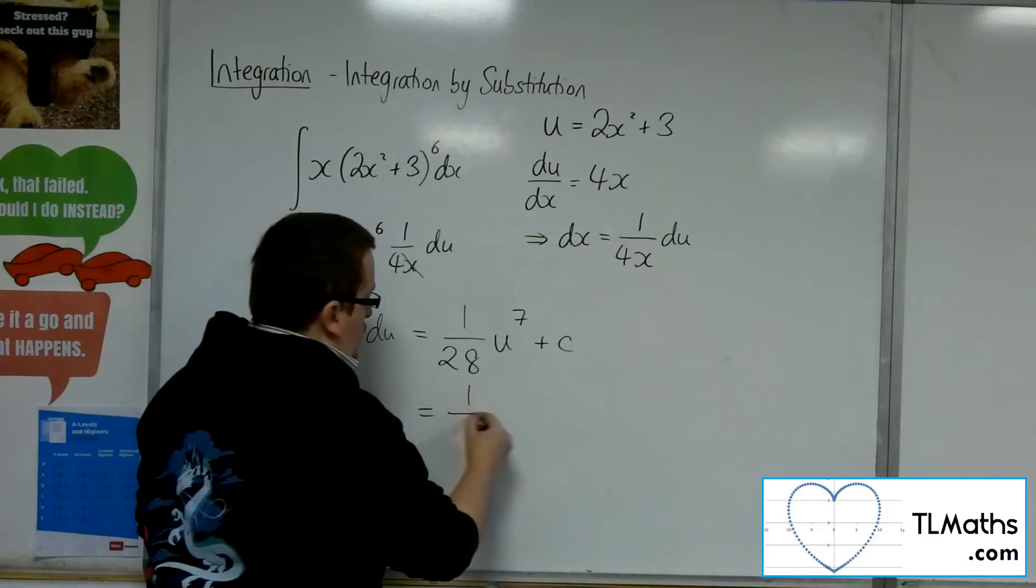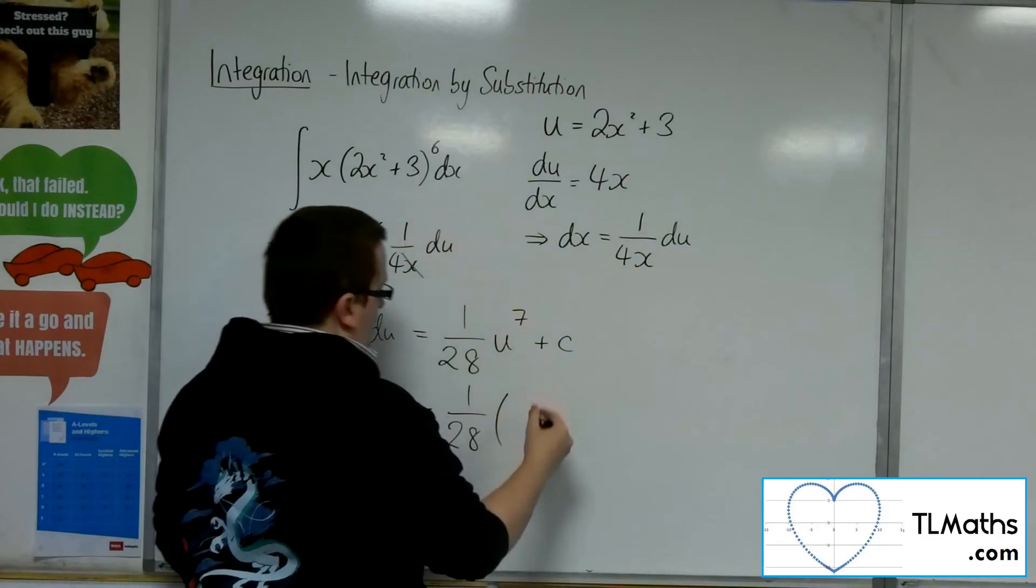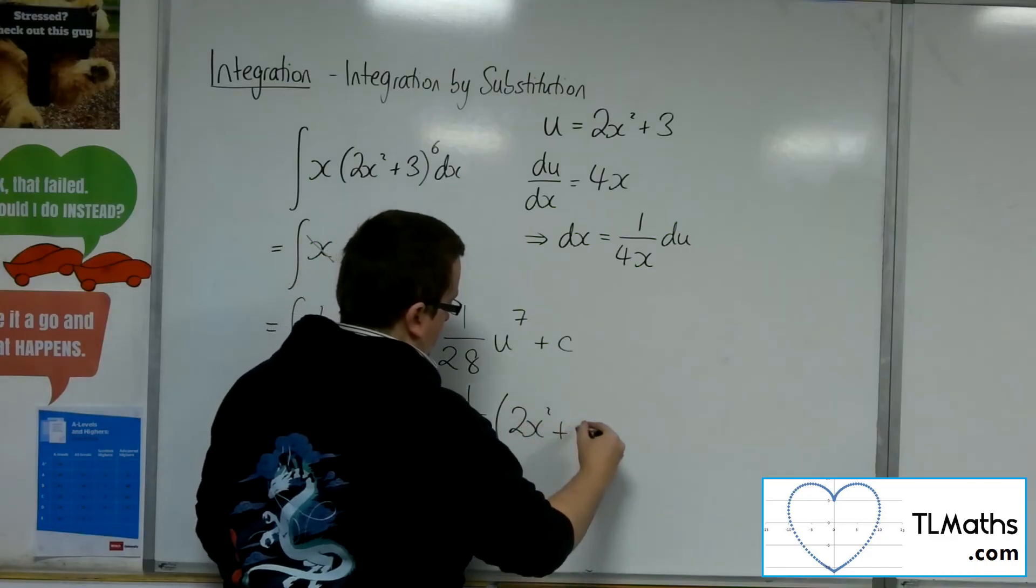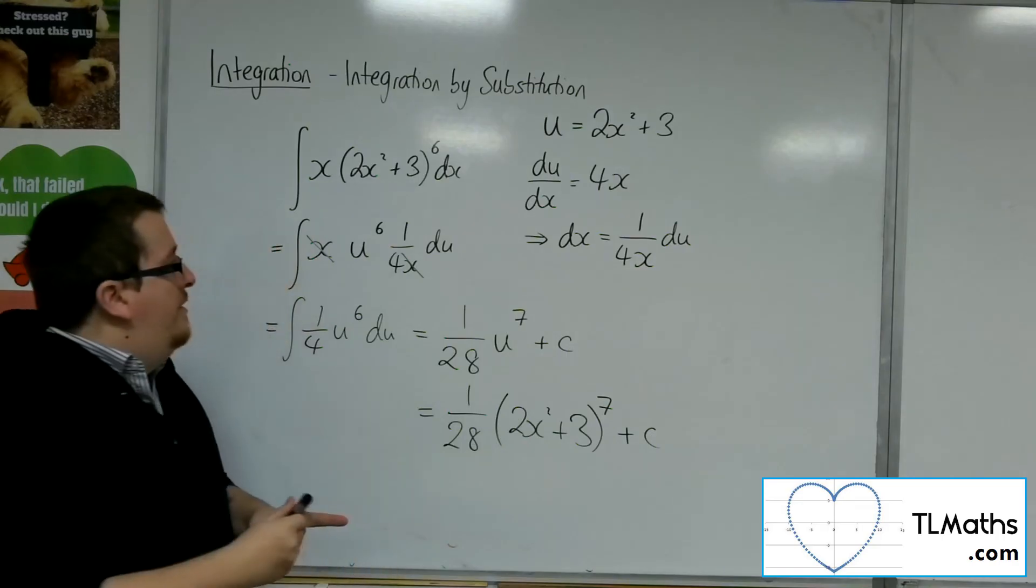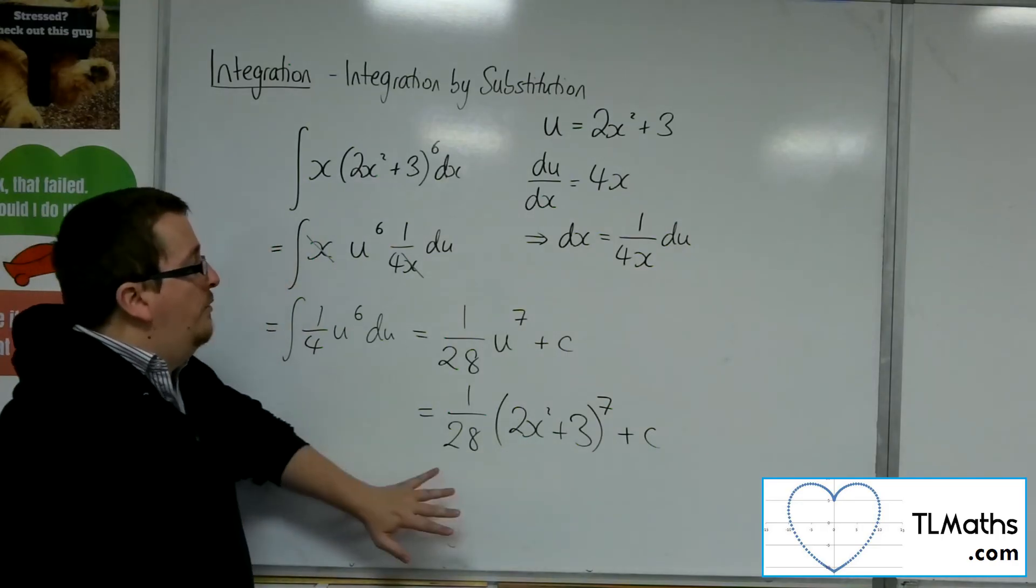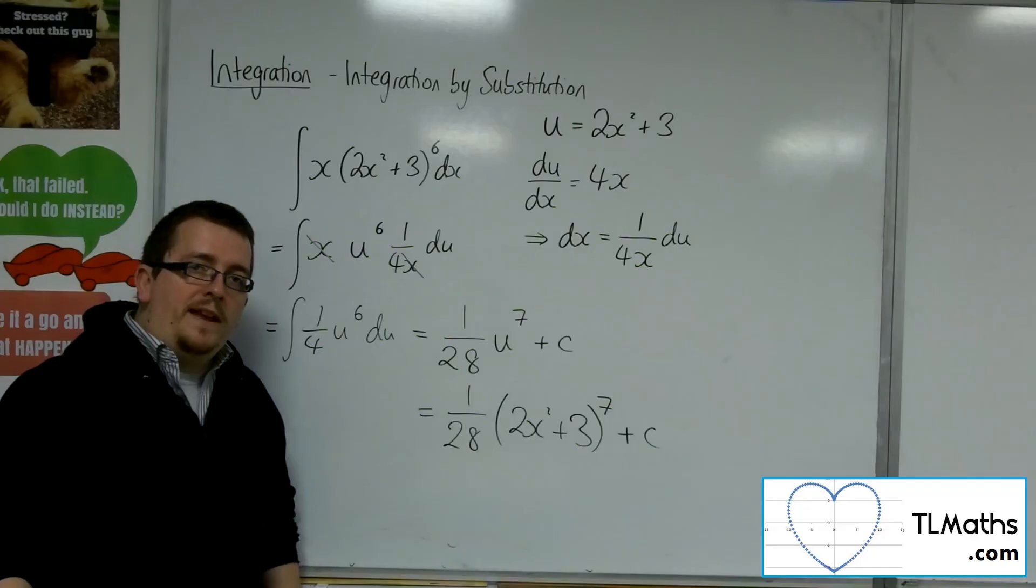And so the u was the 2x squared plus 3. And there is my result. So we're going to go through some examples like this in the next video.